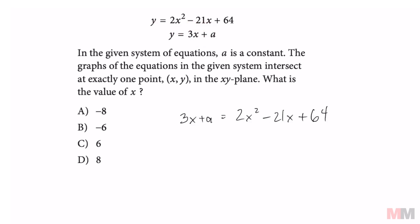And once we got that, we're going to put this in standard form. So all you got to do is subtract 3X, which we can subtract from negative 21X, and A is a constant. We're just going to put that at the end there. So we're going to get 2X squared minus 24X plus 64 minus A.